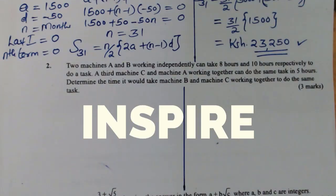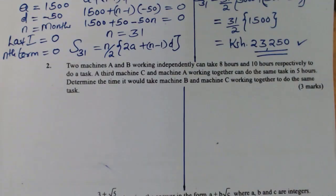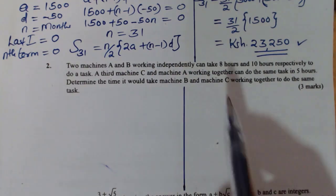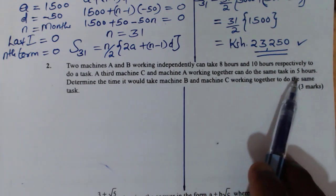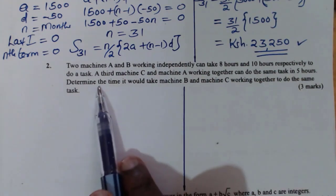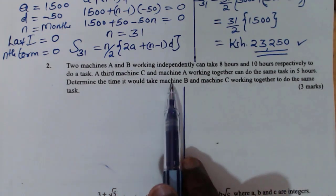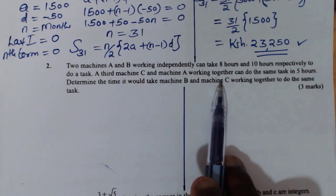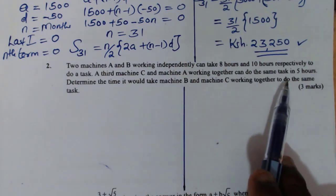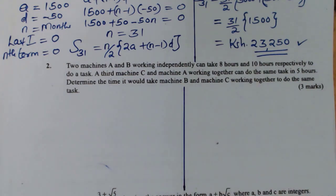Question number two. Two machines A and B working independently can take eight hours and ten hours respectively to do a task. A third machine C and machine A working together can do the same task in five hours. Determine the time it will take machine B and C working together to do the same task.